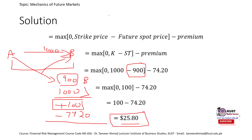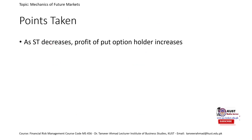Comparing long call and long put: in the long call, profit increases as ST increases. But in the long put, as ST increases, profit decreases or loss increases. For the buyer of the put option — who is buying the option but selling the asset — the conclusion is: as ST decreases, the profit of the put option holder increases, as we saw when ST decreased to 900 and profit increased to 25.80.